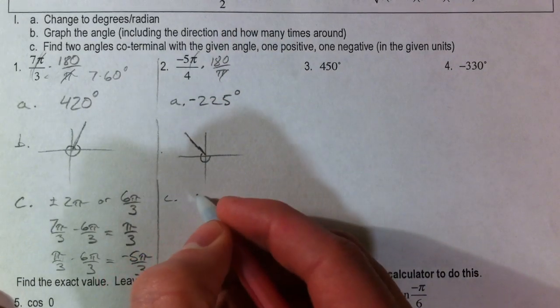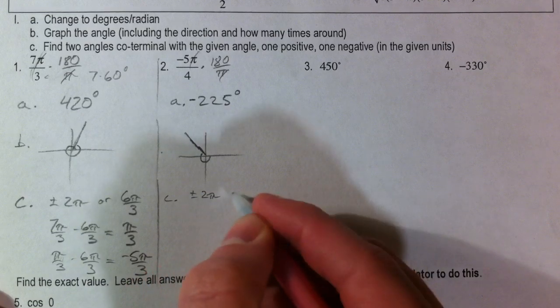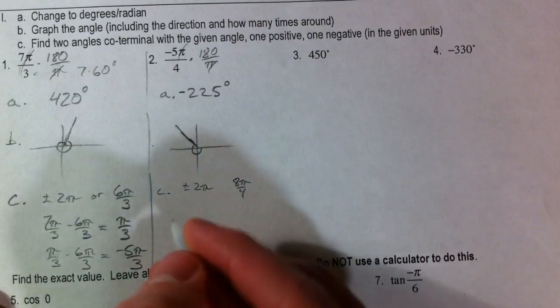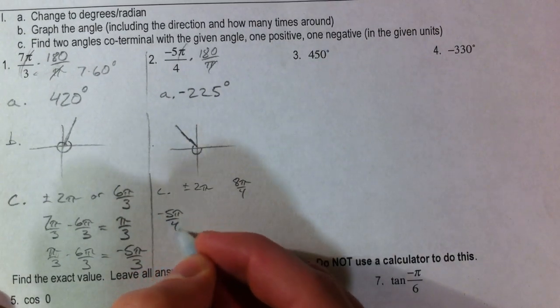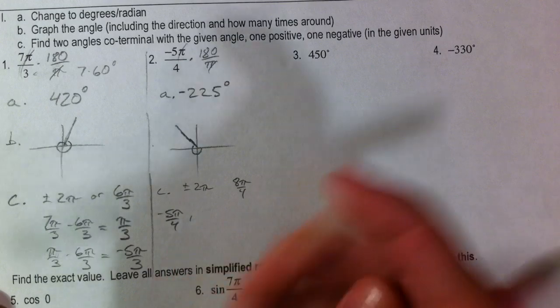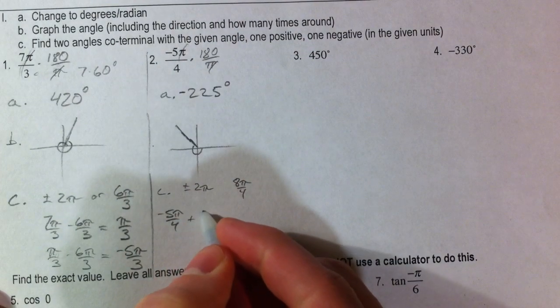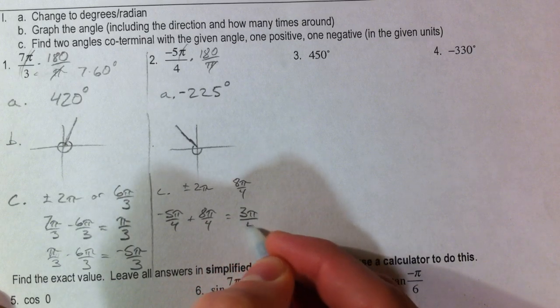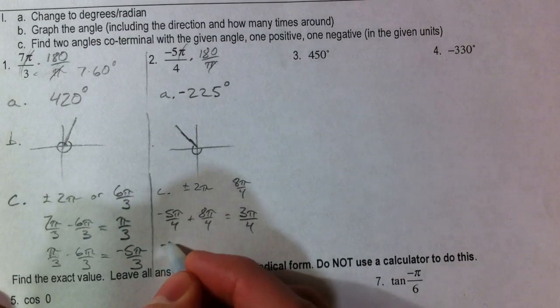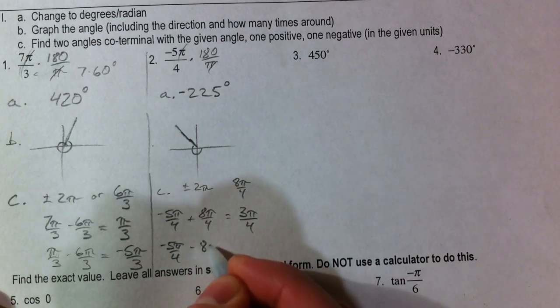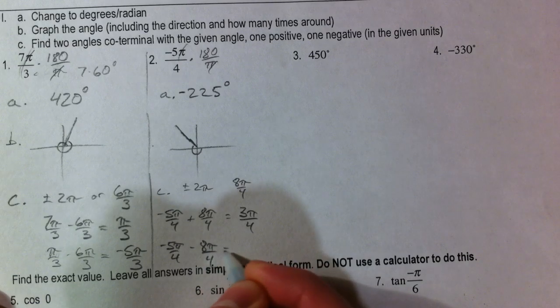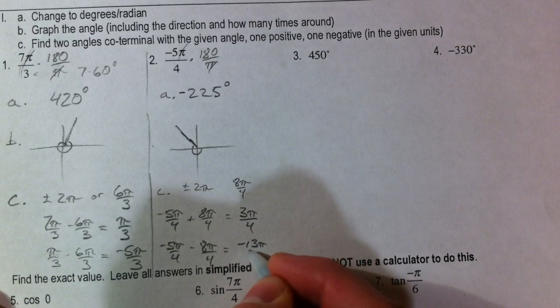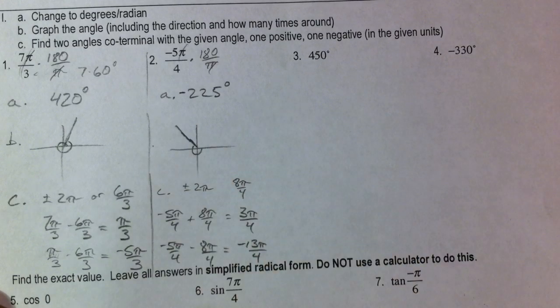So, part C, add or subtract 2π, which in this case is going to be 8π over 4. So, negative 5π over 4. And let's go plus 8π over 4. And that's the same thing as 3π over 4, which makes sense, because we're coterminal with that one. And if we go the other way, subtract 8π over 4, we get negative 13π over 4. So, there you have it.